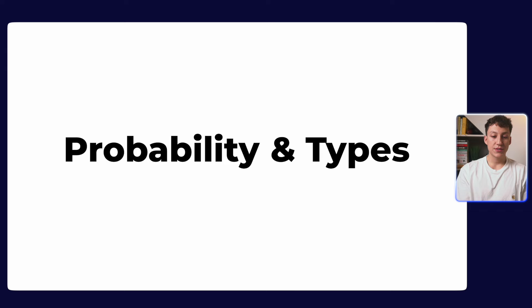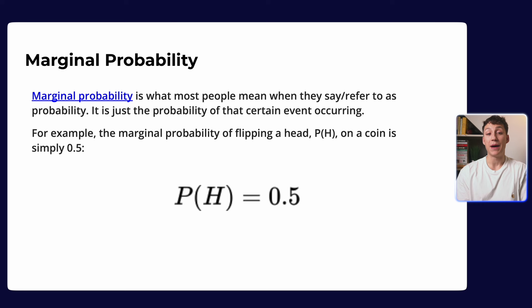Let's begin with discussing what probability really is. When most people refer to probability, they actually refer to something called marginal probability — the probability of events occurring. A common example is: what's the probability of flipping a head? In this case it's simply 50%, assuming we have an unbiased coin. Marginal probability is just the regular layman view of probability — what's the probability of something happening as an event on its own.